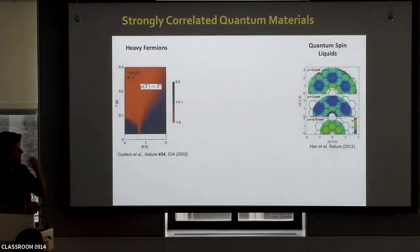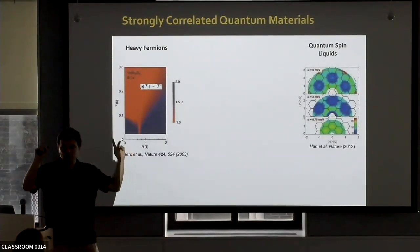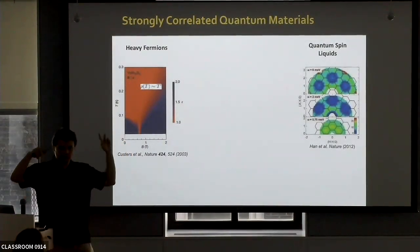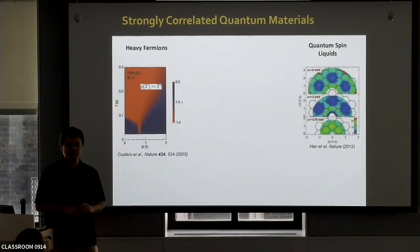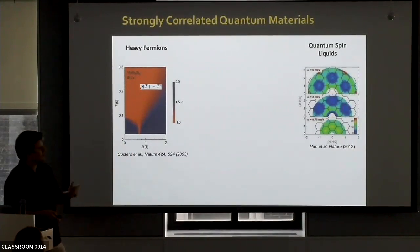You also have materials such as quantum spin liquids, where the electron spins, even as you cool down to zero temperature, keep fluctuating and don't order, and give rise to very interesting topological properties.